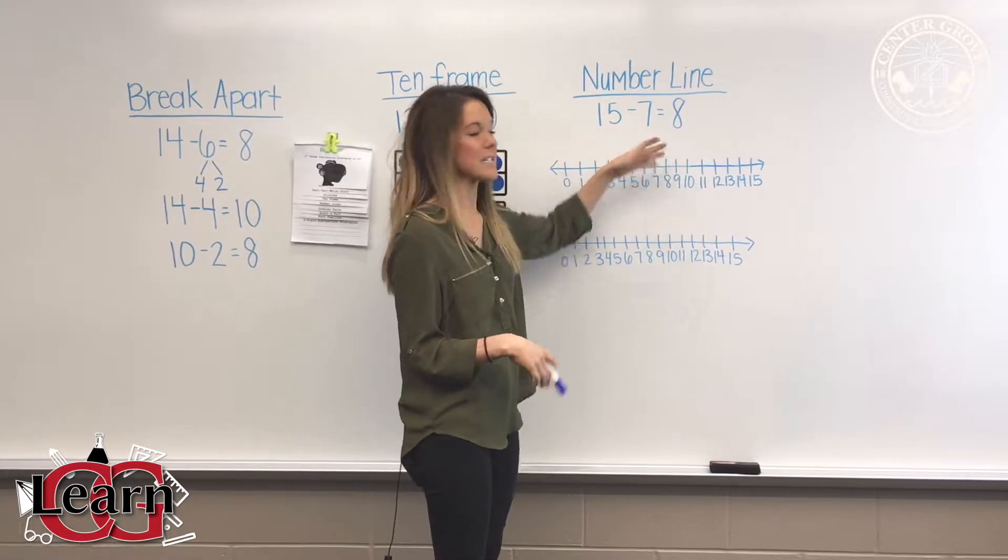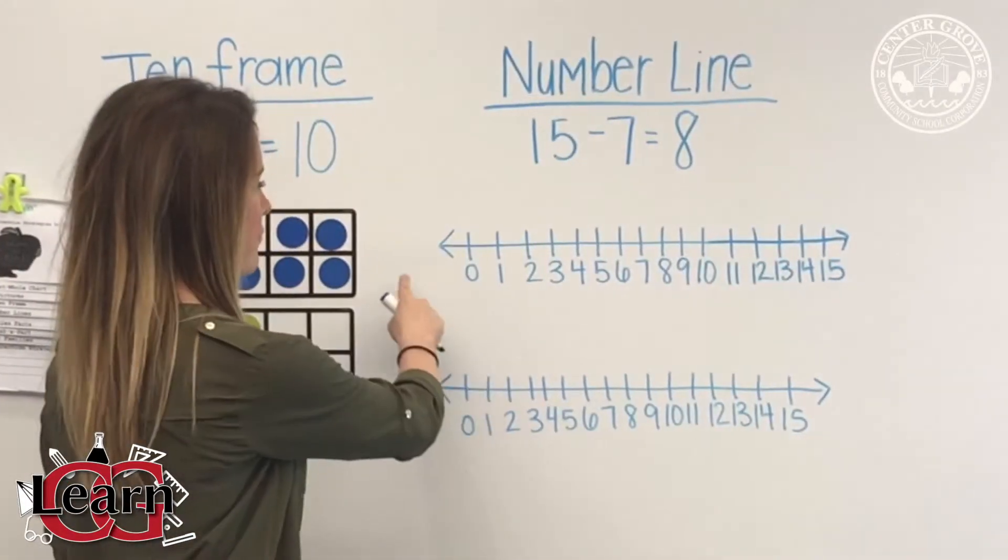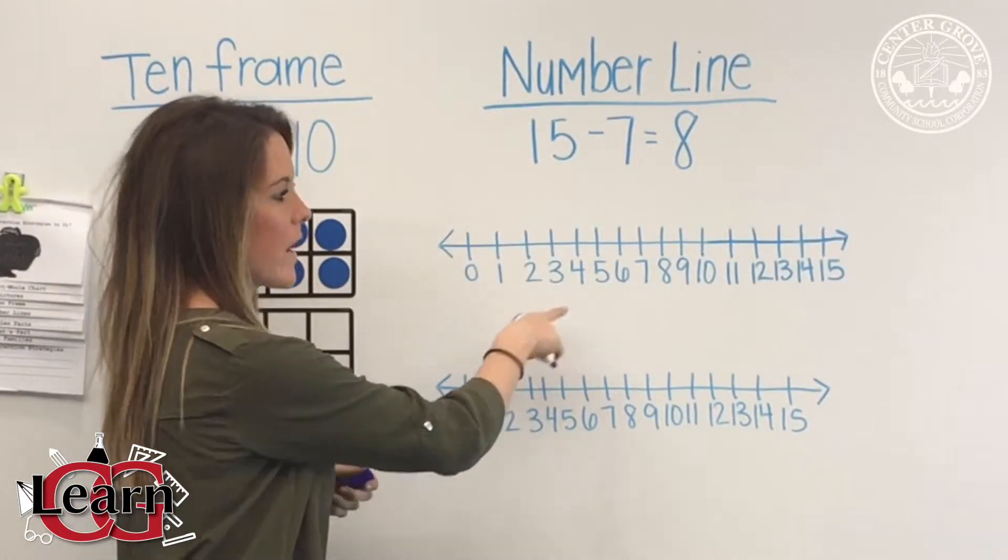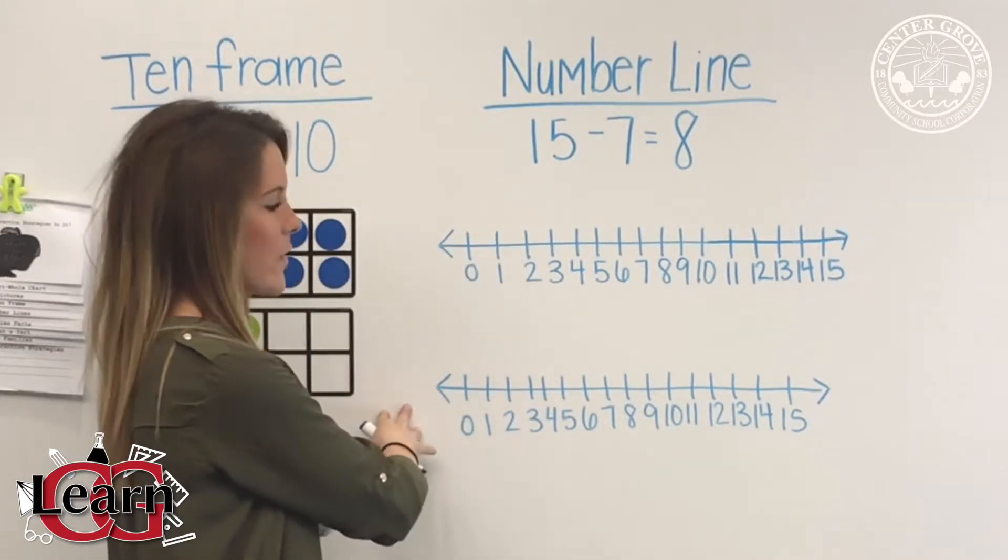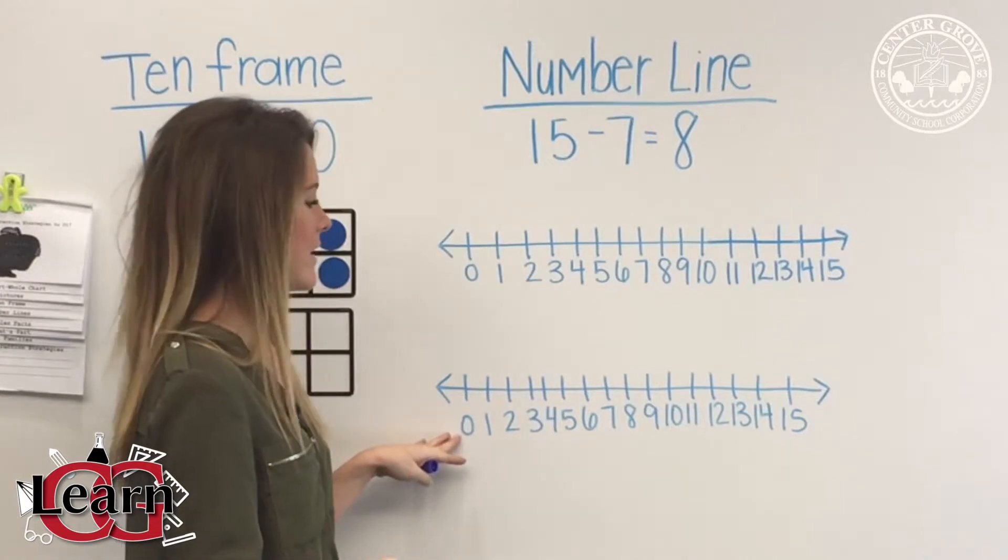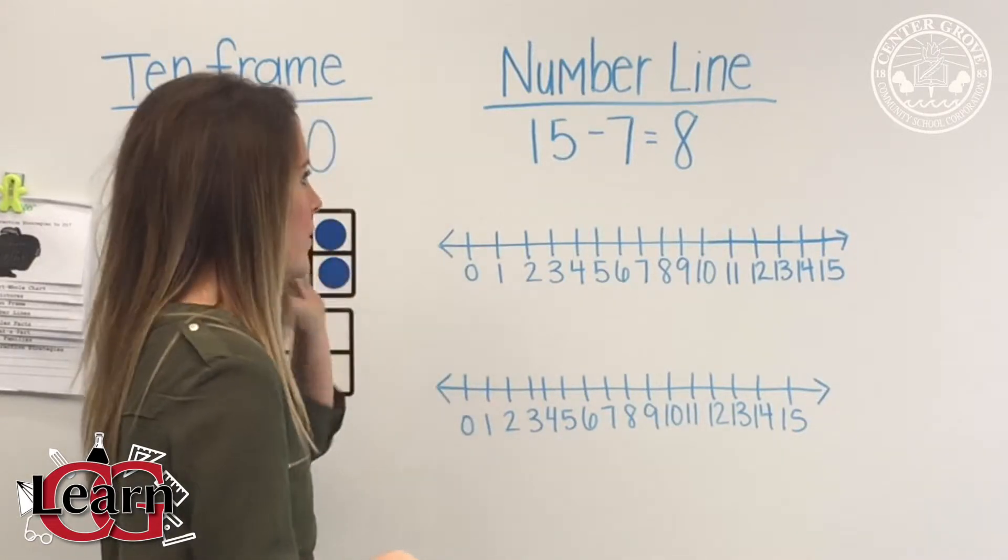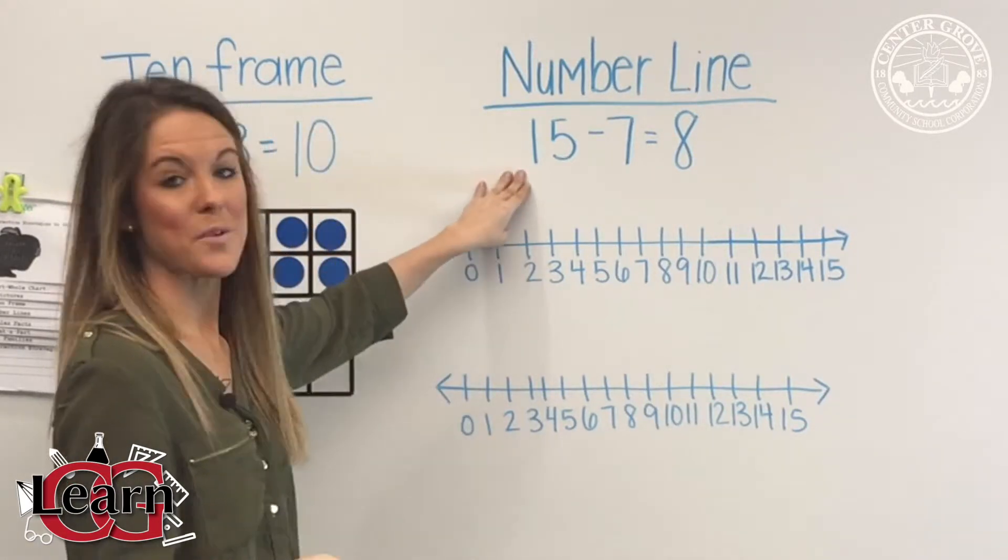Over here we have a number line. I went ahead and did 15 minus 7. For this first one, we're going to go ahead and do the normal subtraction on a number line and go backwards, and then I'll show you how we can go forwards on the number line on this bottom one.